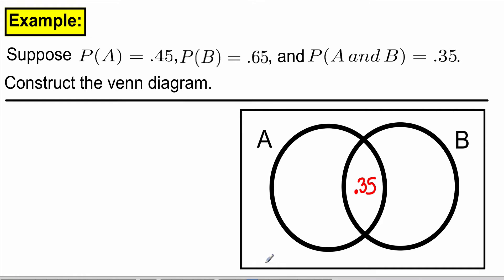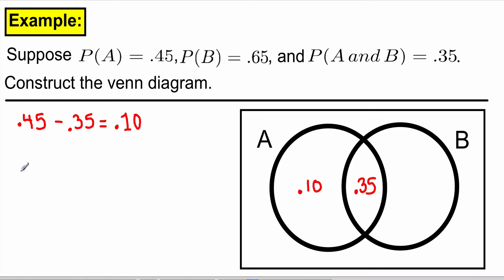To get the probability of A but not B, we take probability of A, which is 0.45, and take away the overlap, which is 0.35, and that gives us 0.10. To get the probability of just B and not A, we take probability of B, which is 0.65, and subtract the probability of the overlap from it, and that gives us 0.30.